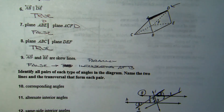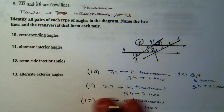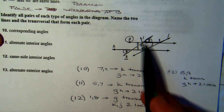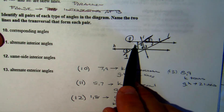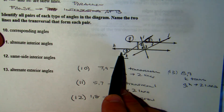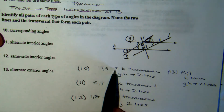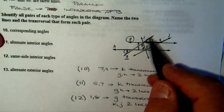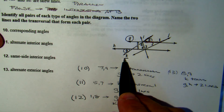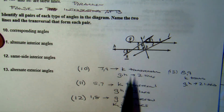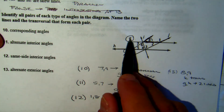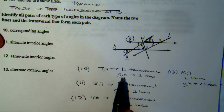Now the second part, dealing with angle relationships. Corresponding angles: if I look at angles 7 and 9, seven is in the lower left and nine is in the lower left — same relative location. The transversal they both are on is K, and the lines are G (for 7) and H (for 9). So G and H are the two lines.